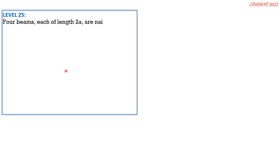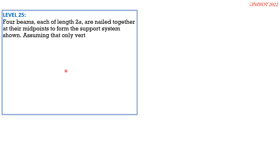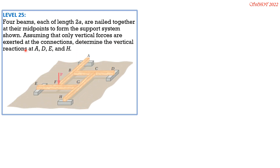For the last problem: four beams, each of length 2A, are nailed together at their midpoints to form the support system shown. Assuming only vertical forces are exerted at the connections, determine the vertical reactions at A, D, E, and H. The technique is to draw FBDs of the four beams, establish relationships for the reactions through moment equations, and express each reaction in terms of one unknown.